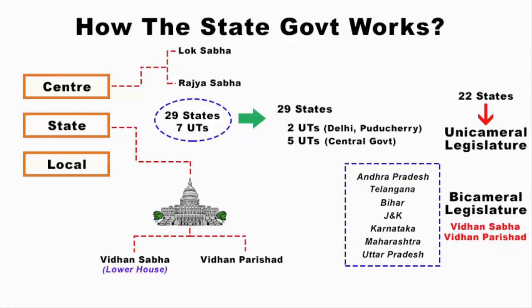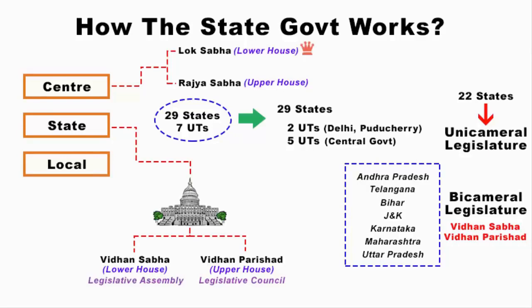The Vidhan Sabha is the lower house, similar to Lok Sabha, and the Vidhan Parishad is the upper house, similar to Rajya Sabha. Vidhan Parishad is also called the Legislative Council, and Vidhan Sabha is called the Legislative Assembly. Just as Lok Sabha is much more powerful than Rajya Sabha at the central level, at the state level, Vidhan Sabha is much more powerful than Vidhan Parishad. The reason is that both Lok Sabha MPs and Vidhan Sabha MLAs are elected directly by the citizens of India.